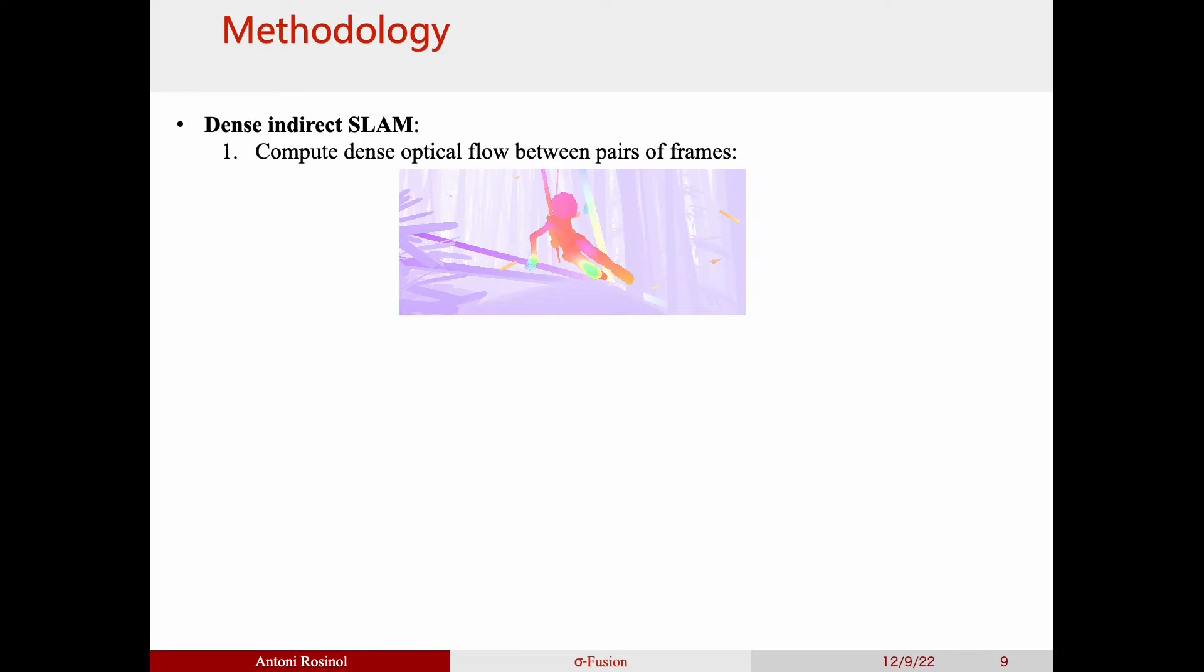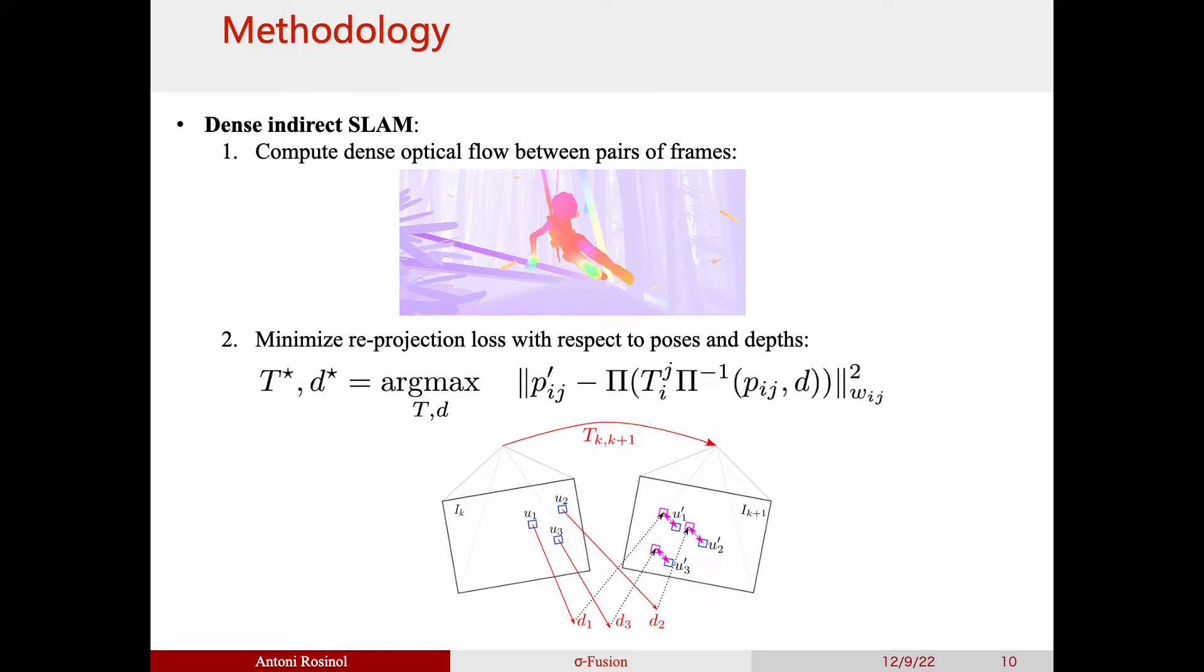Dense indirect SLAM first starts by computing dense optical flows between pairs of frames. We then minimize the reprojection loss with respect to both cameras and depth.